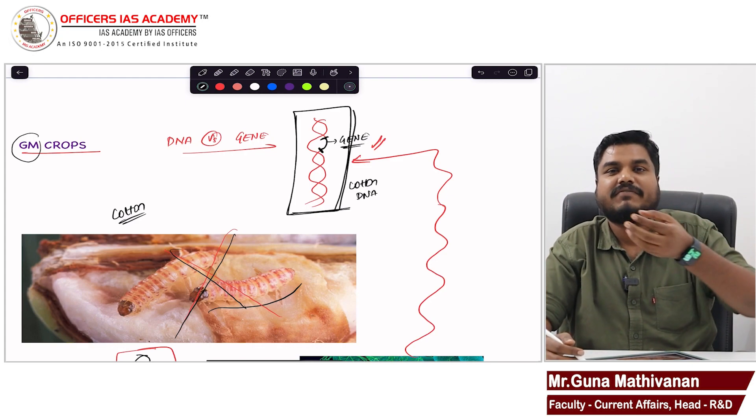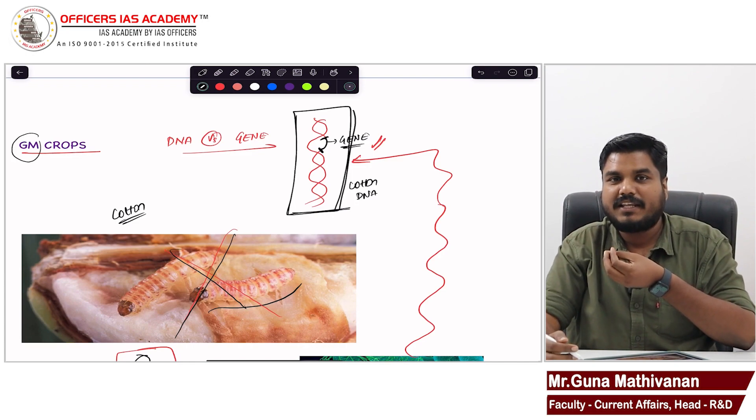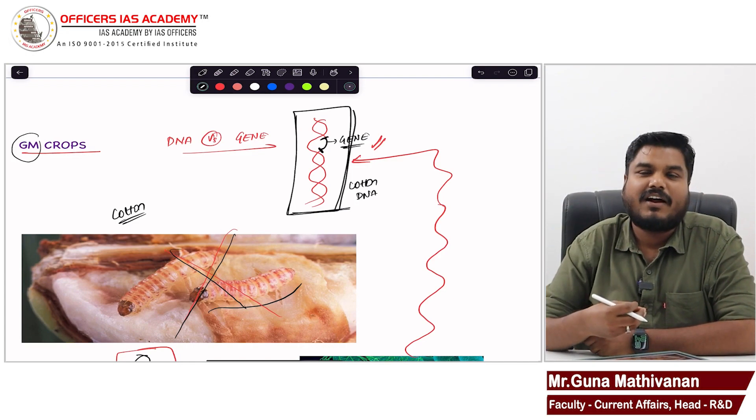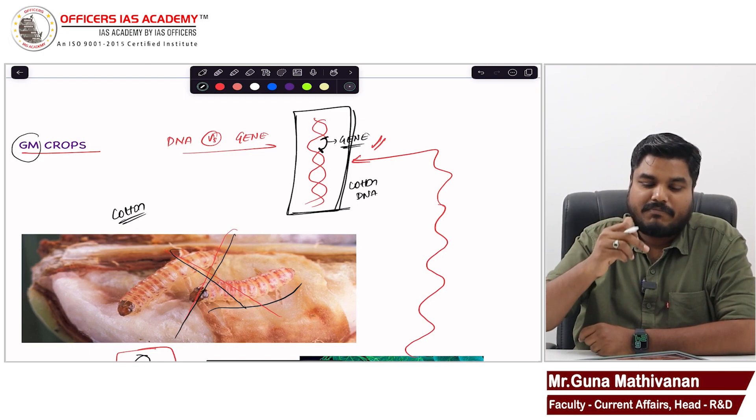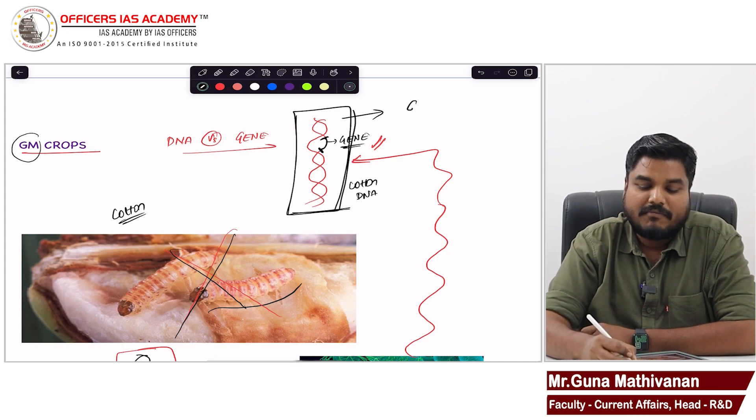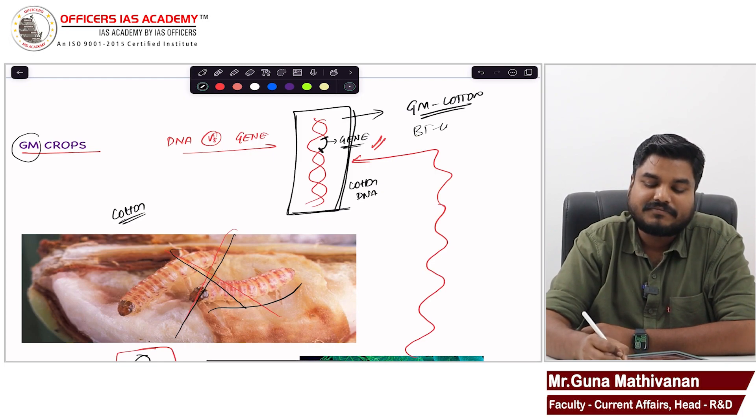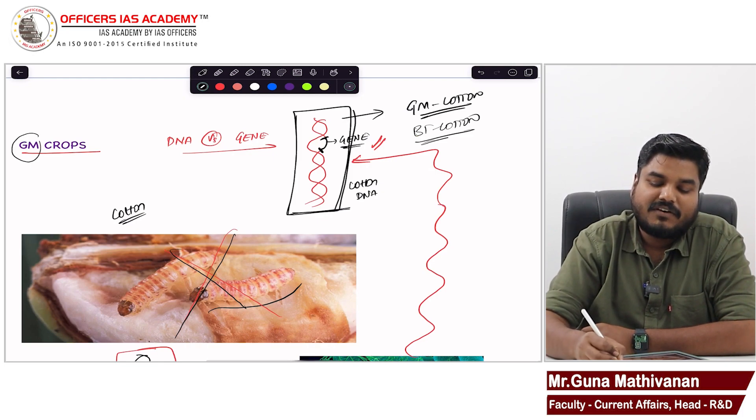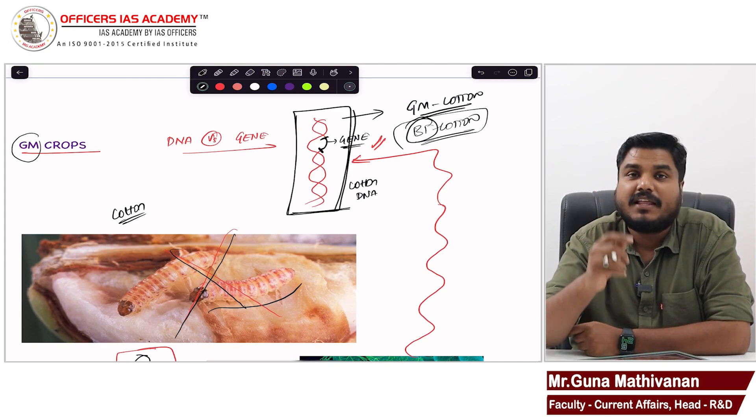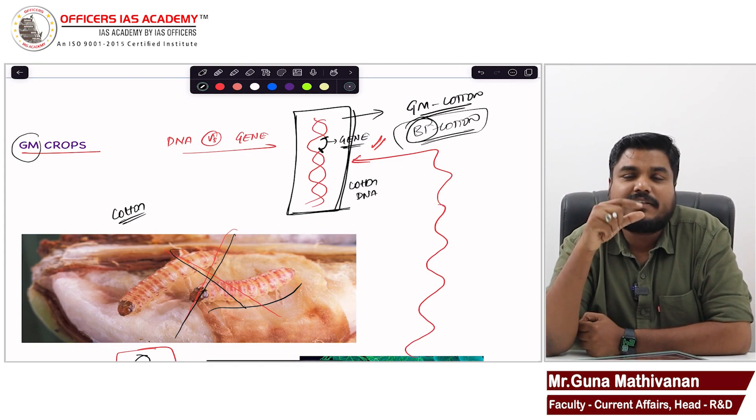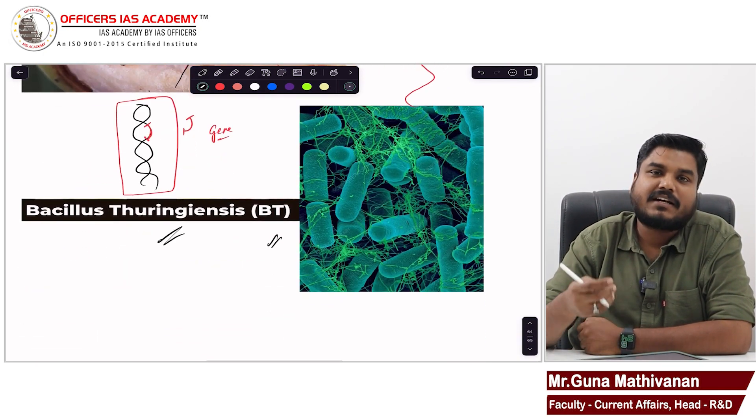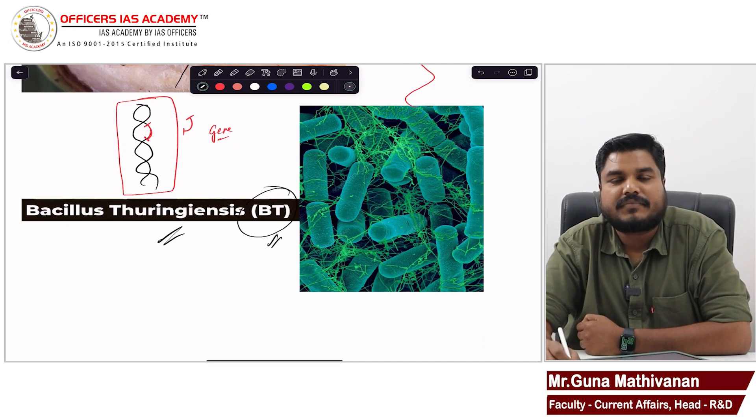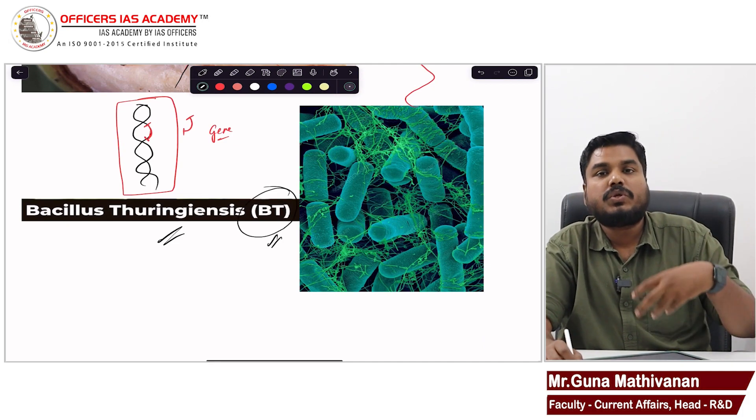This is called genetic modification. We took the genes of a bacteria and we added it to the DNA of the cotton. And this is called genetic modification. That cotton plant is called genetically modified cotton. And that cotton is called Bt cotton. Bt here refers to that bacteria's name, Bacillus thuringiensis.